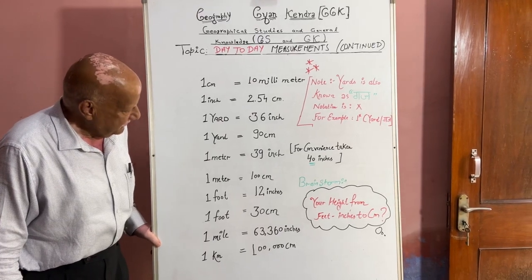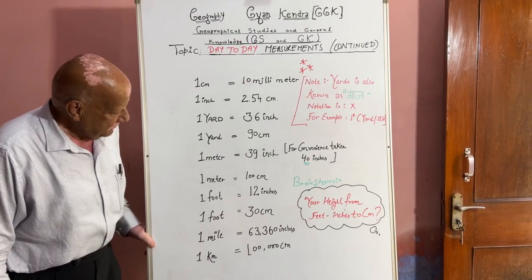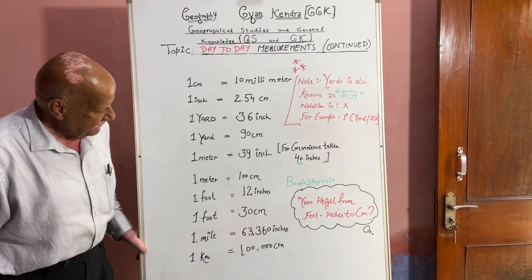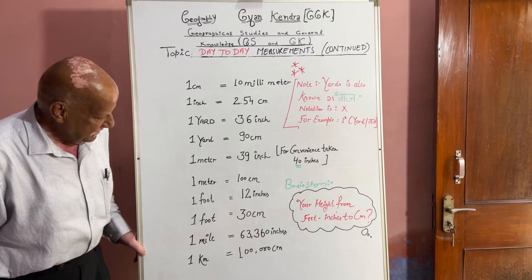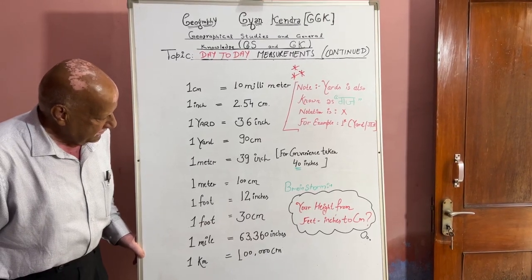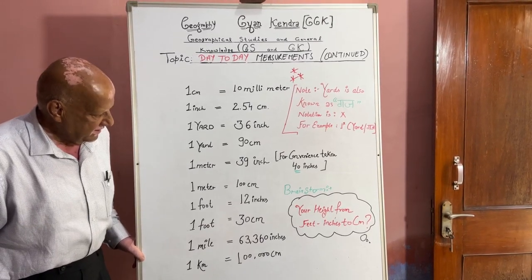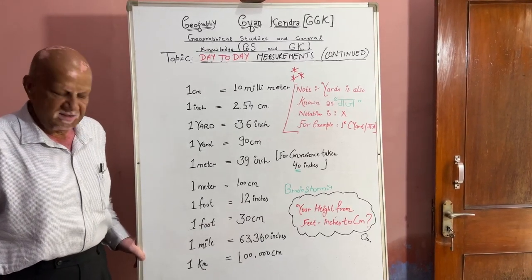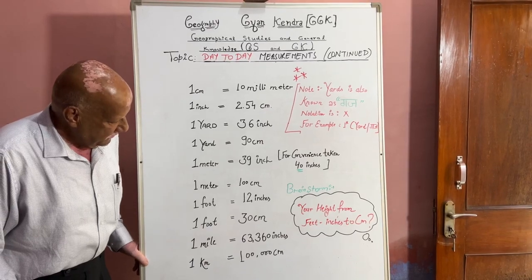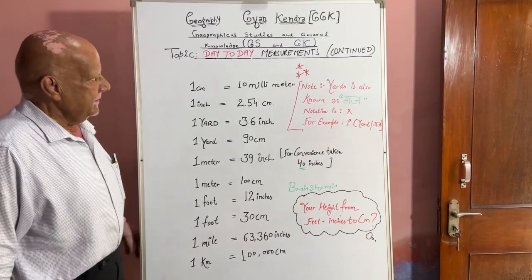1 foot is equal to 12 inches; 1 foot is equal to 30 cm. 1 mile is equal to 63,316 inches. 1 kilometer is equal to 100,000 cm.